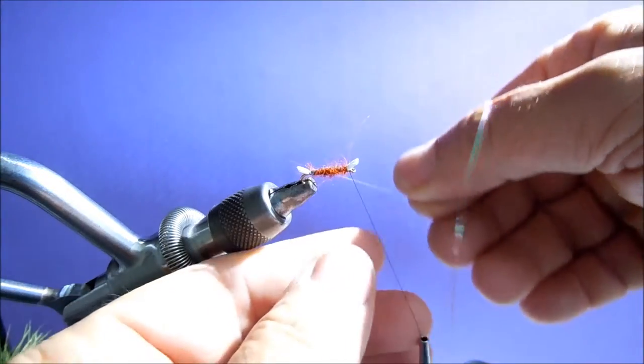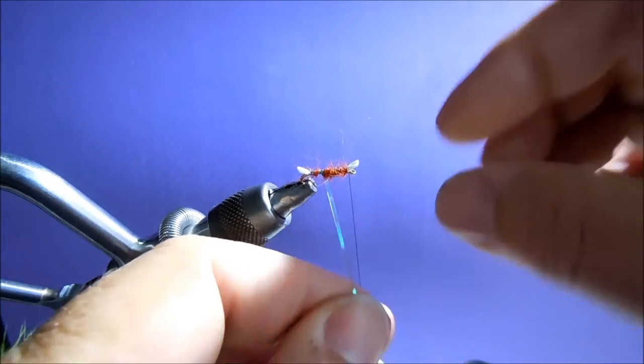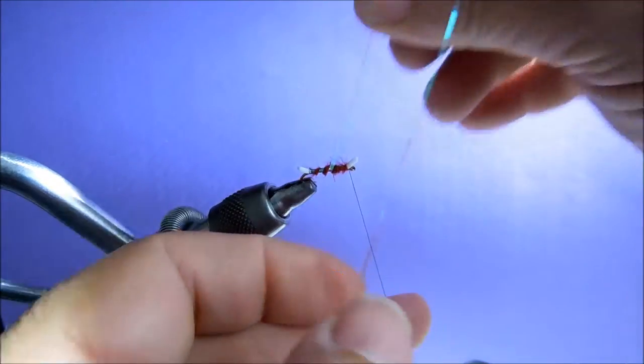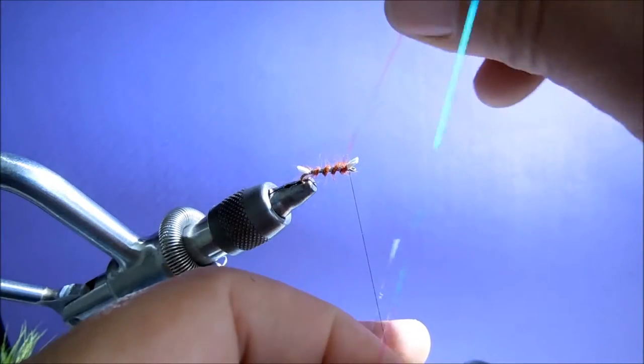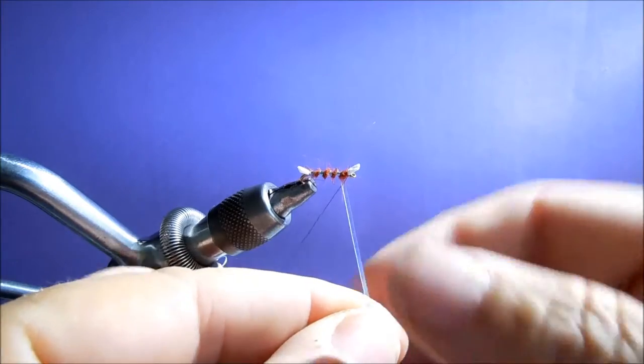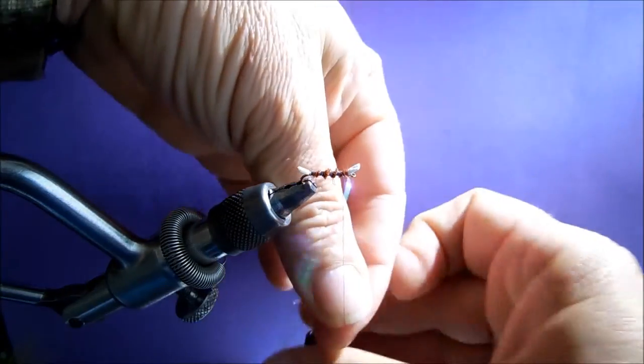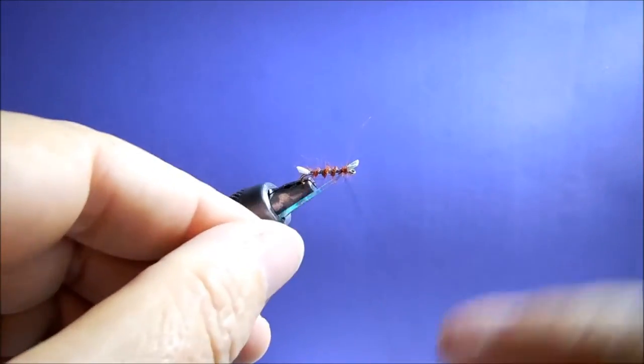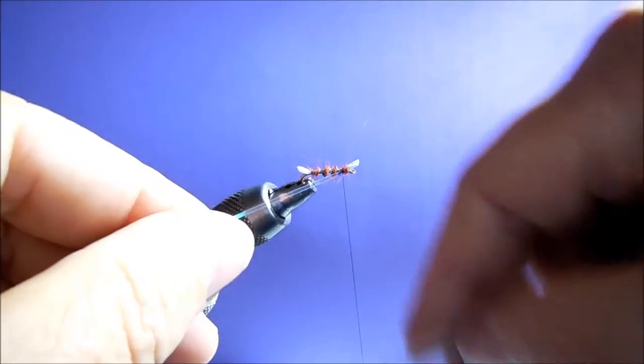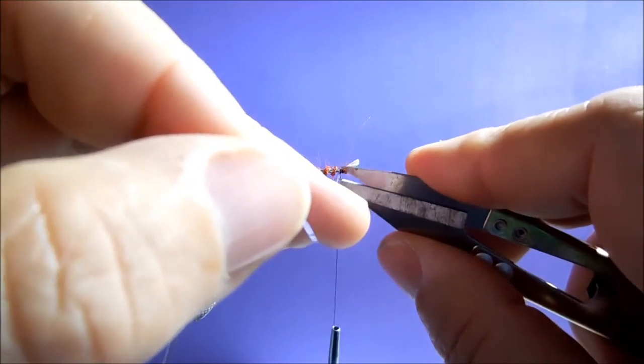Now bring that flash through the body: one, two, three, four turns should be enough. Try and get control of it. That'll do as well. Snip that off, just stay nice and tight.